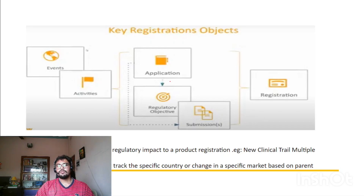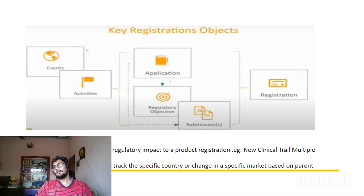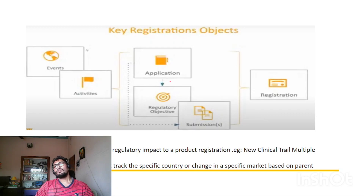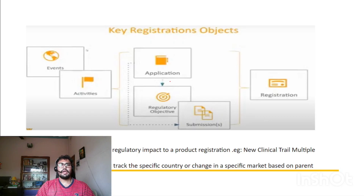Here is how the flow works: let's say a product needs to be relabeled or needs some modification for a specific country. An event is created for that specific country, and from the event page, the activity, application, regulatory objective, and submission are created in parallel for that specific country. You can create these in bulk in RIM. I'll share a link from Veeva where you can find how the whole registration process is described. From a specific event, you can create an activity, application, regulatory objective, and submission, and from the regulatory objective you can control the registration.